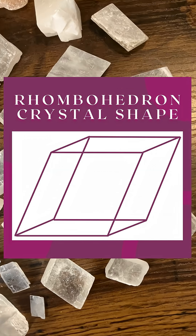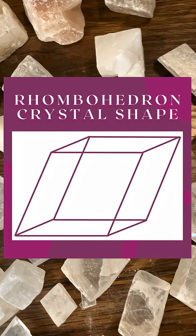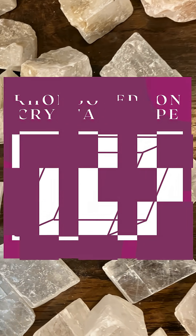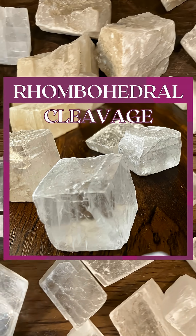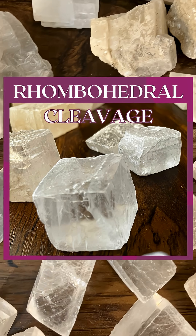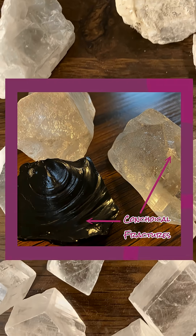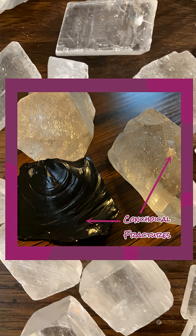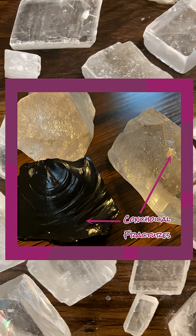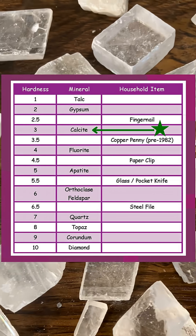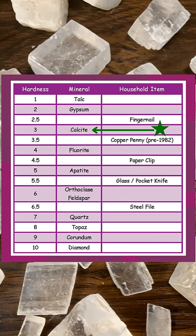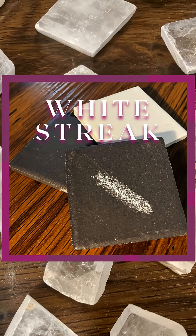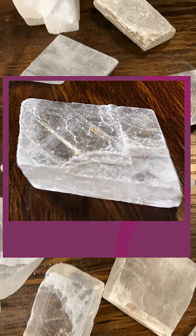Crystals of calcite can form rhombohedral shapes that look like a squished cube. It also has rhombohedral cleavage and may have a conchoidal fracture, which creates a spiral pattern on the crystal when it's broken. Calcite is a three on the Mohs hardness scale, has a white streak, and a glassy to pearly luster.